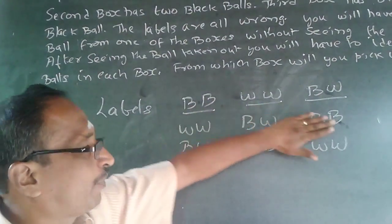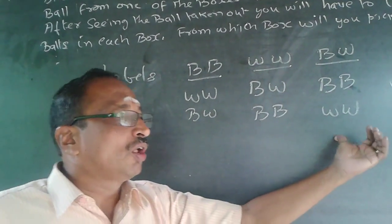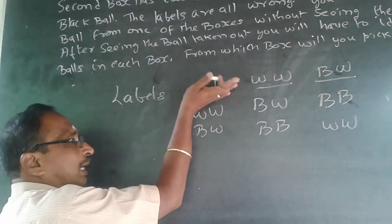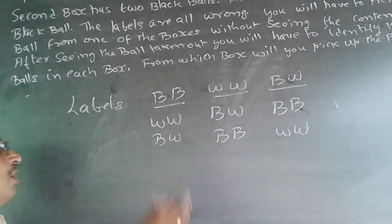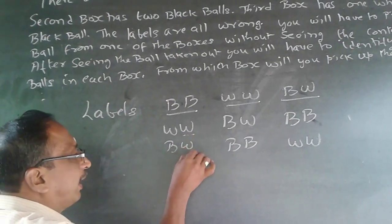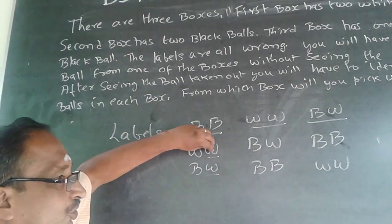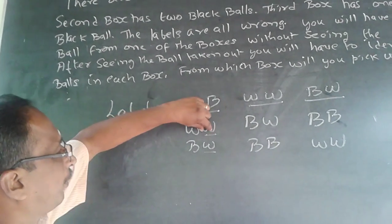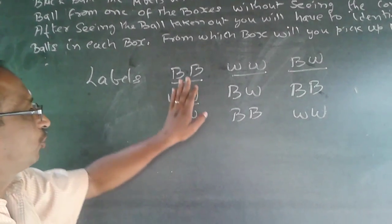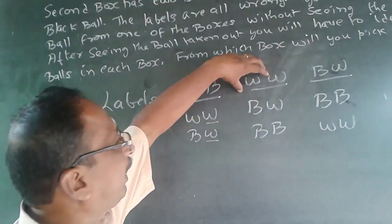Suppose I pick a ball from the black and black label box. The possible contents are white and white, or black and white. If I get a white ball, I'll be confused whether it is a combination of two whites or a combination of black and white. So I should not pick it up from the black and black label box.